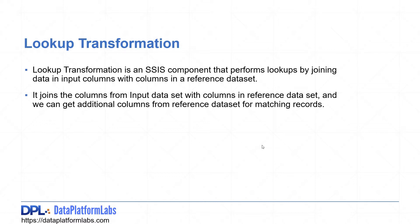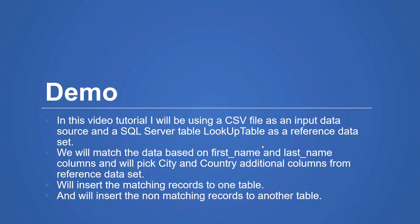In this video tutorial I will be using a CSV file as an input data source and a SQL Server table named 'lookup table' as a reference data set. We will match the data based on first name and last name columns between the input and reference data set, and pick city and country as additional columns from the reference data set. Then we'll insert the matching records to one table and the non-matching records to another table.